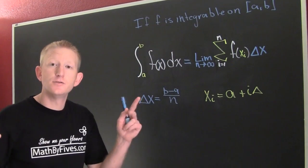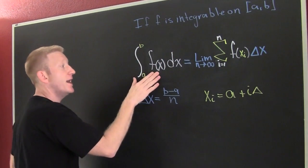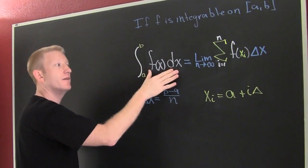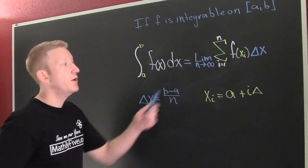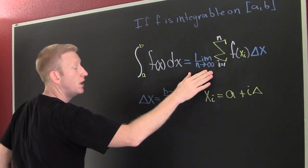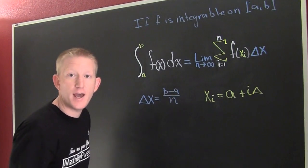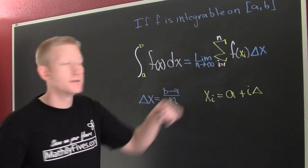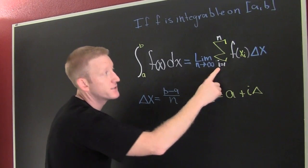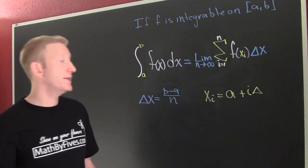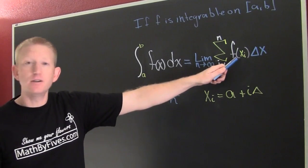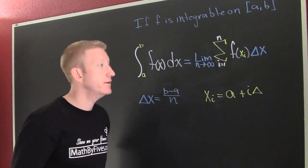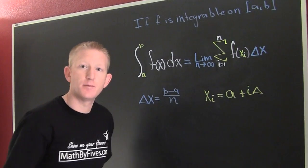If f is an integrable function on the closed interval [a, b], and we are trying to find the integral from a to b of the function, we're going to use the limit as n goes to infinity of the Riemann sum, where i starts at 1 and goes to n. This is that function evaluated at some point in the little sub-interval, where that's the width of the sub-interval.